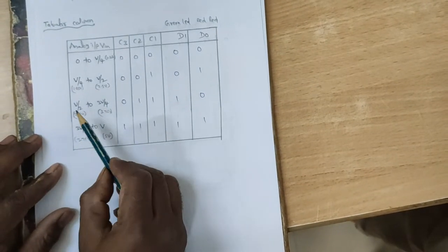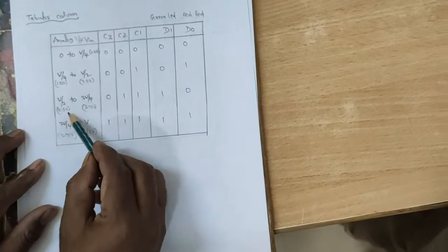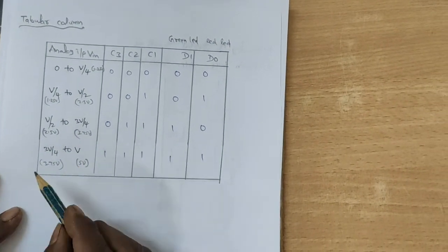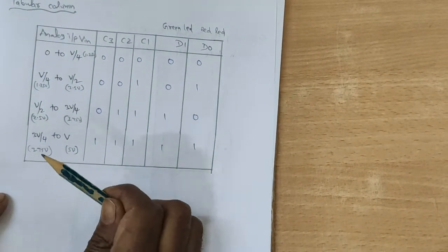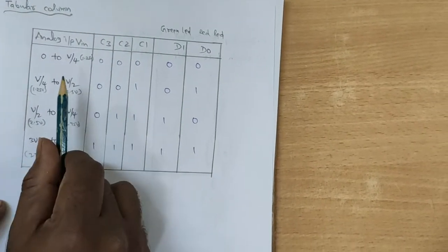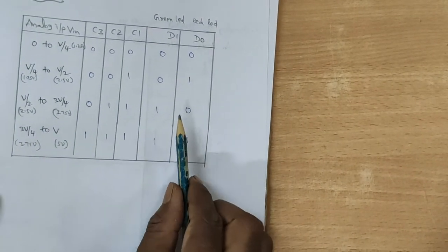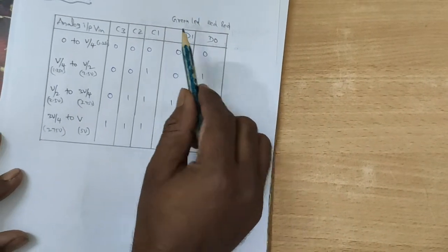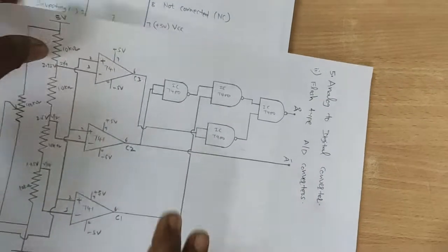The third stage is V/2 to 3V/4, that is 2.5 volts to 3.75 volts. The fourth stage is 3.75 volts to 5 volts. You can observe the 4 stages as the input changes through these levels. The comparator outputs are C1, C2, C3, and the digital output is D1, D0, where D1 uses a green LED and D0 uses a red LED.